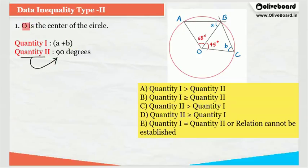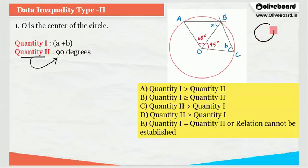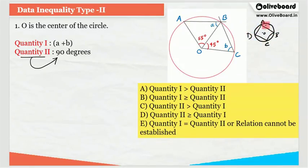The information provided is: O is the center of the circle, and inside this circle we have a quadrilateral AOCB. Note that this quadrilateral is not a cyclic quadrilateral. A cyclic quadrilateral is one whose all vertices are touching the circumference of the circle. Here, the vertex O is not touching the circumference but is the center of the circle, so this is not a cyclic quadrilateral.